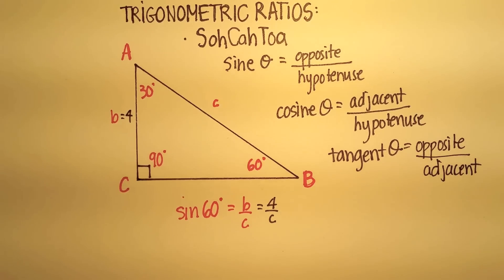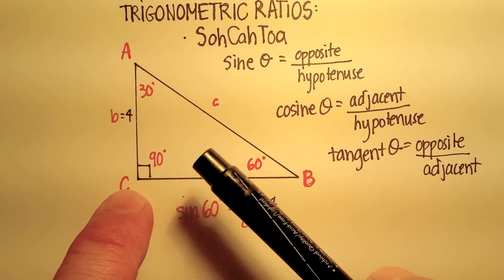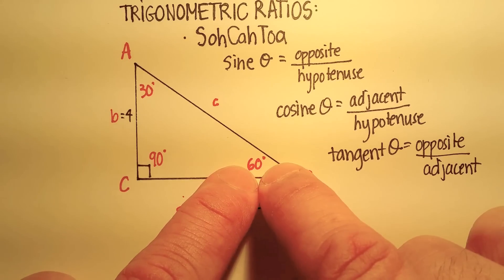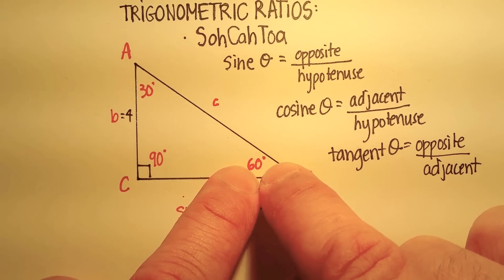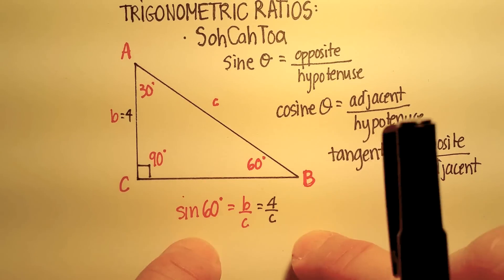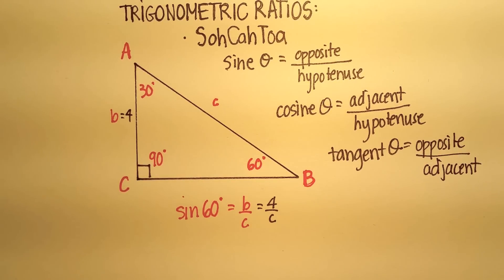Now that's going to be true no matter what right triangle you have. This could be 45 degrees, 30 degrees, 22 degrees, 1 degree, but the sine of whatever that degree is will always equal some kind of a constant number. So now we know that the sine of 60 degrees is 0.866, and that's equal to 4 divided by c.